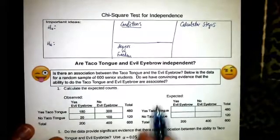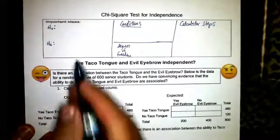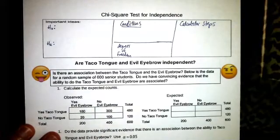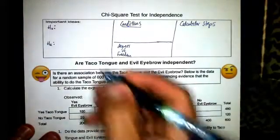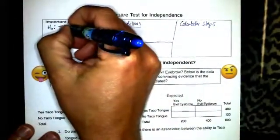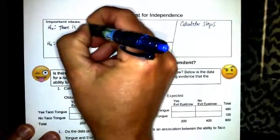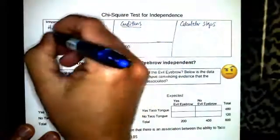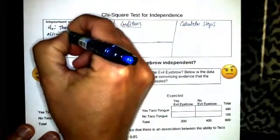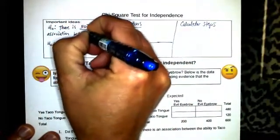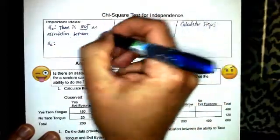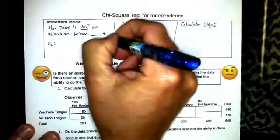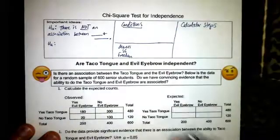For our second example for a chi-squared test for independence, we're going to write down the important ideas here, starting with the null hypothesis. The null hypothesis is there is not an association between your two variables.